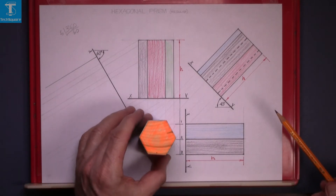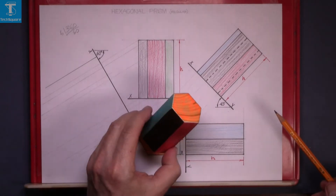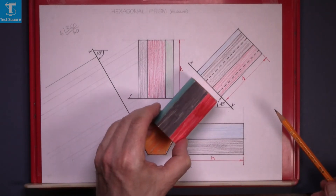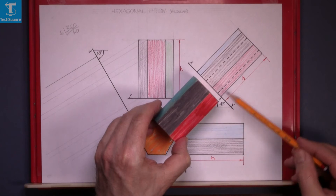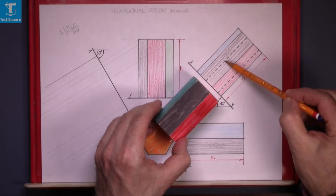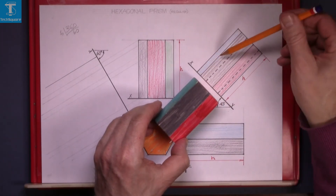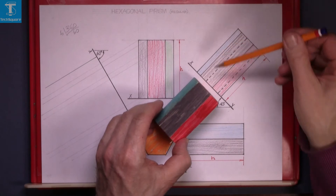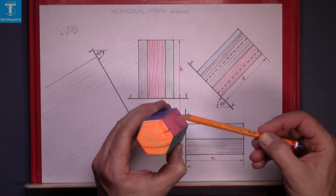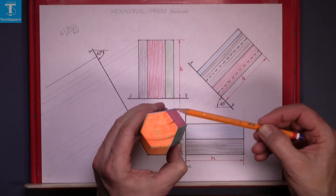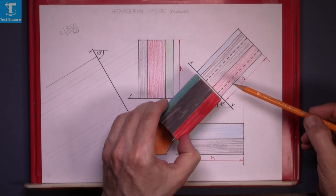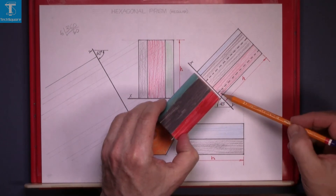Now just to look at the view we see: the red, the black, and the blue surface — and behind, the two dotted lines to represent the two lines at the back that cannot be seen. That's why they're in dotted lines.